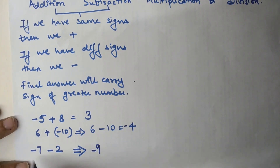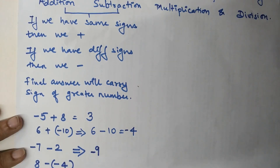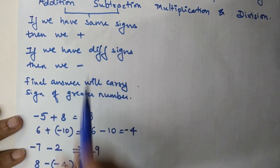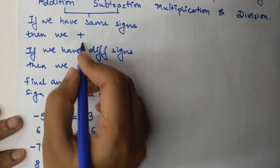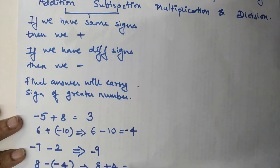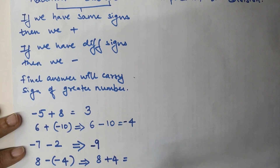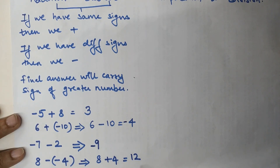Let's take another example: 8 minus minus 4. Here we have two signs right next to each other and both are the same — both minus. Same signs together change into a positive sign, so this becomes 8 plus 4, which is 12. Since the bigger number, 8, is positive, the final answer is positive 12.